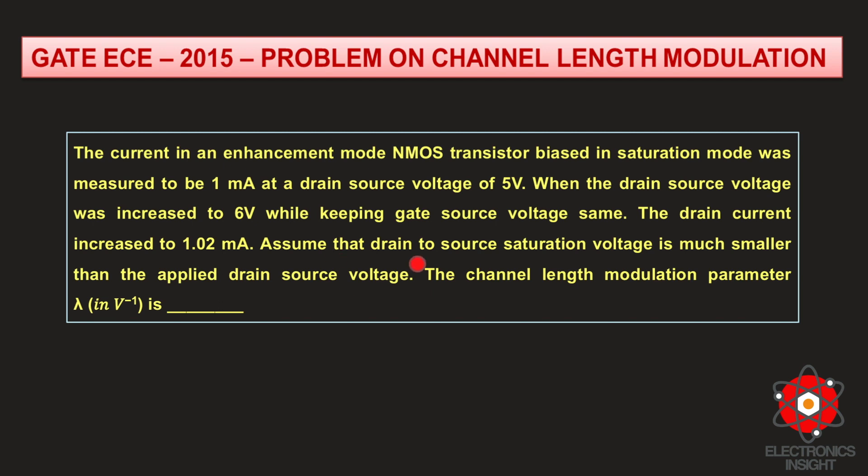They have also given us to assume that the drain-to-source saturation voltage is much smaller than the applied drain-to-source voltage. This is where people get confused because the question is a little bit tricky, but it is just to confuse those who read the question. The drain-to-source saturation voltage is VDS_SAT, which we have seen in our previous discussions on NMOS transistor regions of operation and drain current derivation.